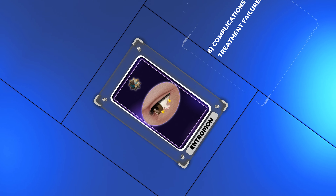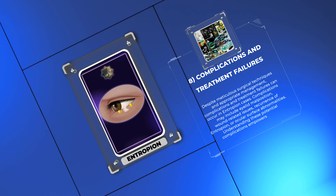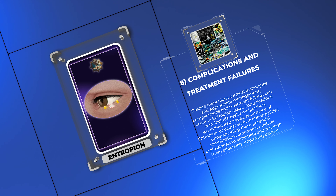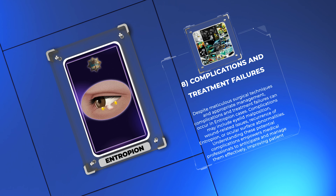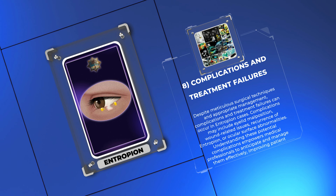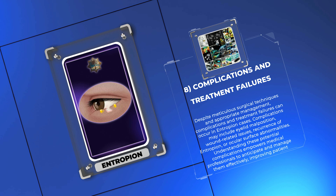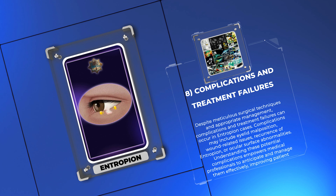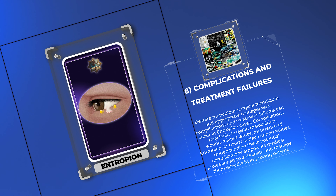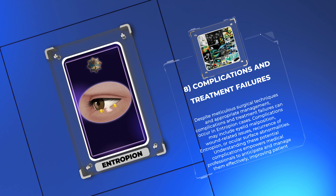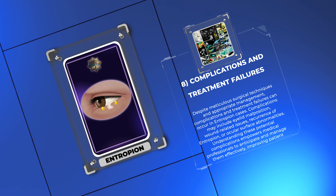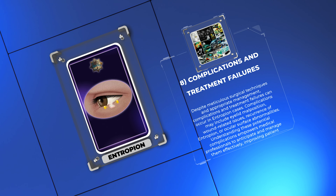Despite meticulous surgical techniques and appropriate management, complications and treatment failures can occur in entropion cases. Complications may include eyelid malposition, wound-related issues, recurrence of entropion, or ocular surface abnormalities. Understanding these potential complications empowers medical professionals to anticipate and manage them effectively, improving patient outcomes.